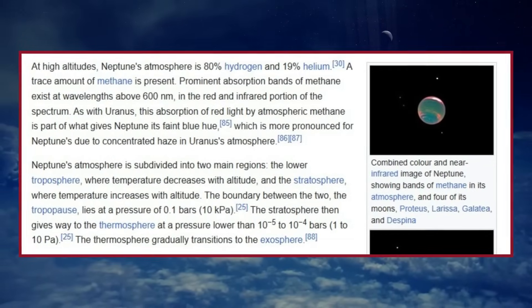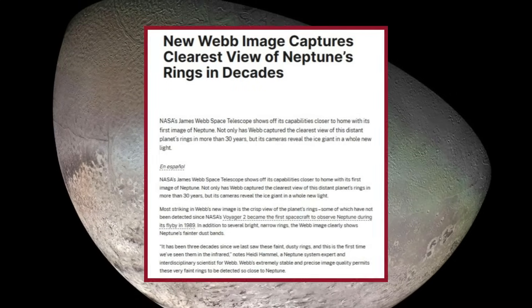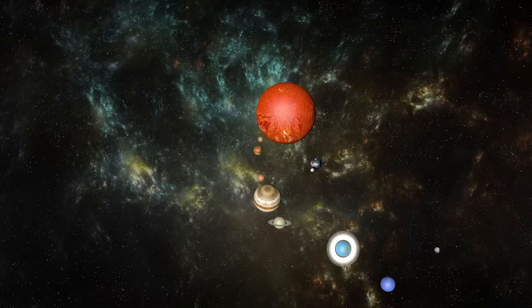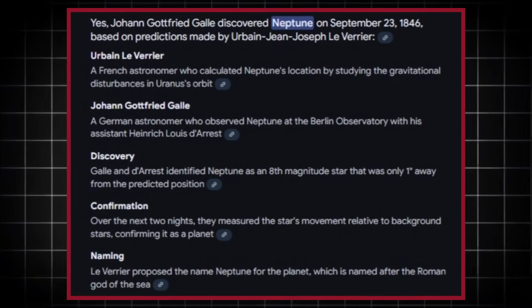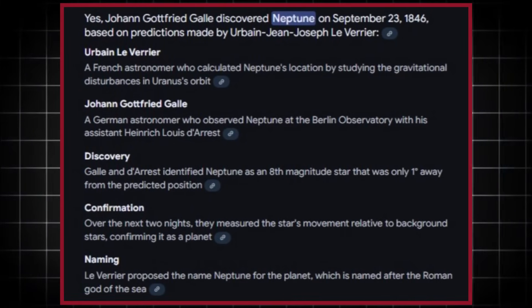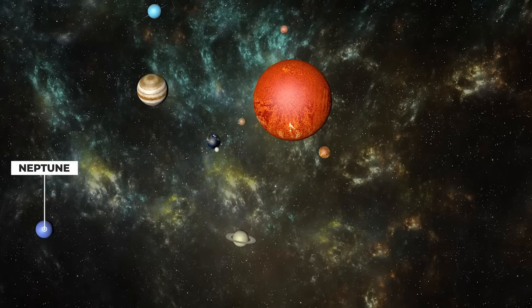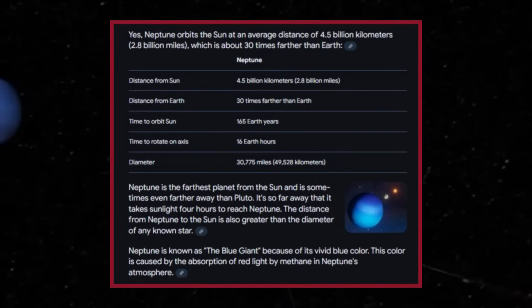Polar Features: One of the most intriguing discoveries from the new images is the identification of unique polar features. Infrared imaging has revealed a warm, bright region at Neptune's South Pole, likely caused by localized heating in the planet's atmosphere. This feature, combined with the detection of new polar vortices, suggests that Neptune's poles may harbor complex weather systems previously unseen.